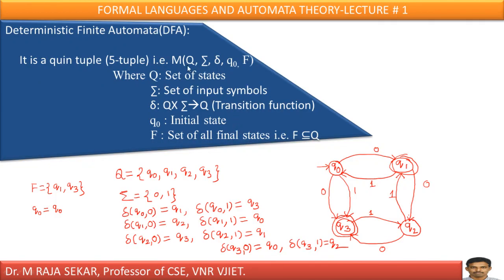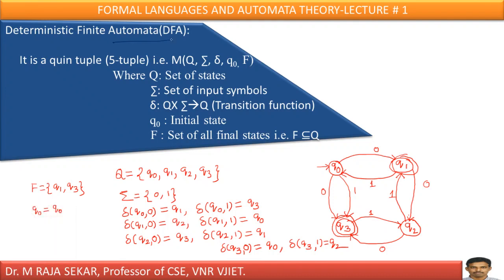Now we will understand what is DFA. DFA means Deterministic Finite Automata. A DFA is a quintuple — a 5-tuple — represented as M = (Q, sigma, delta, Q0, F). Capital Q means set of states. Sigma means set of input symbols. Delta is the transition function: Q cross sigma to Q. Q0 is the initial state. F is the set of all final states. Therefore, F must be a subset of or equal to Q.